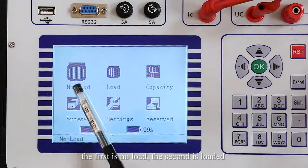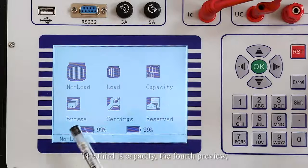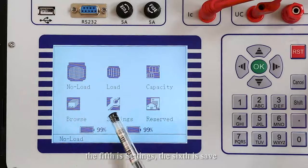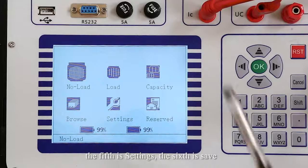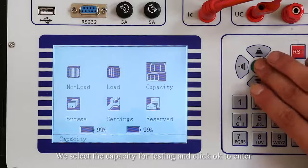The first option is no-load, the second is load. The third is capacity, the fourth is preview, the fifth is system settings, and the sixth is save. We select capacity for testing and click OK to enter.